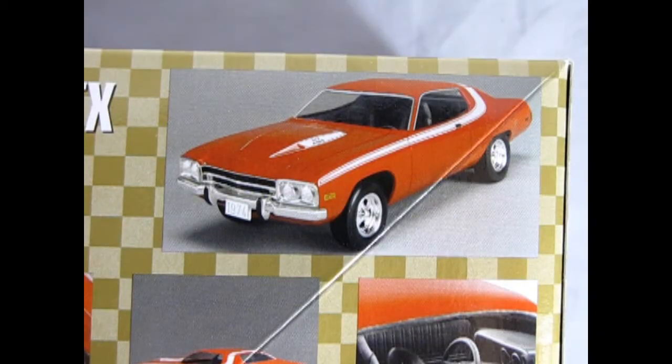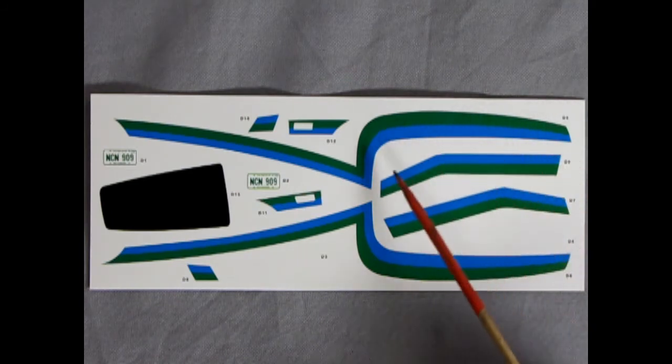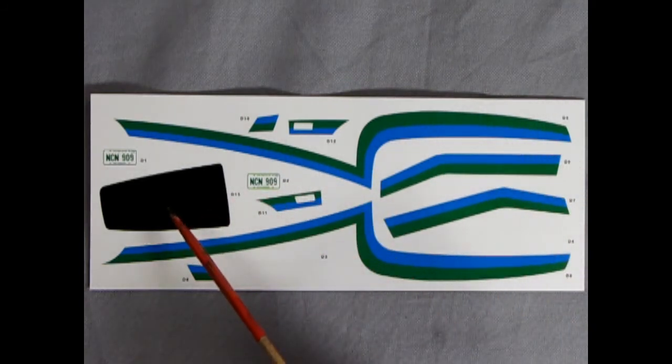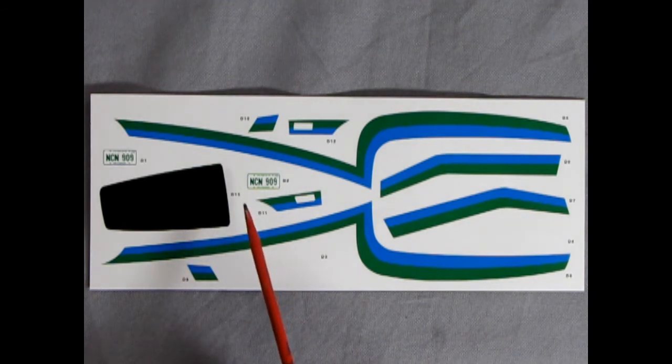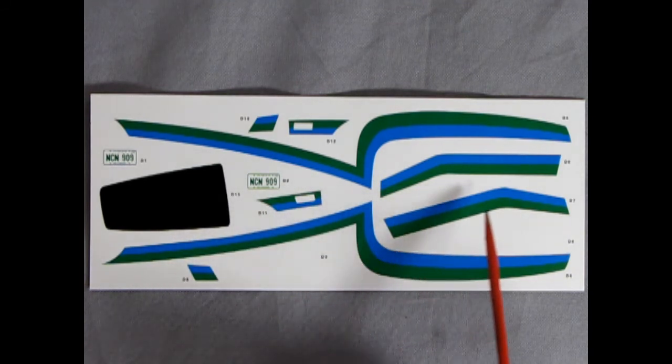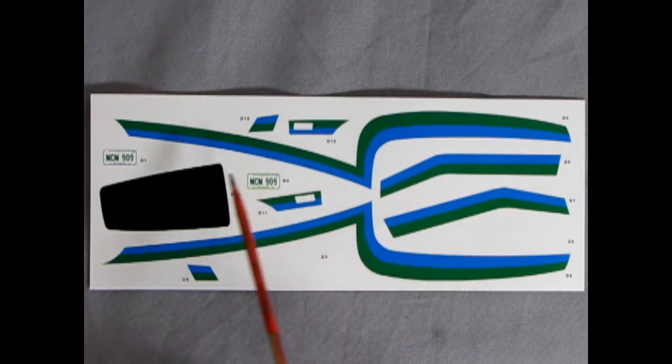Now, it's sad to note that you do not actually get these nice white decals that are on the box art. Instead, you get decals which kind of look like this. So these green and blue stripes are what you actually get, as well as this big black patch for on top of the hood, and some New Hampshire NCN 909 license plates. These reflect the 1983 Street Machine car, which was painted red. So again, I'll show you what that looks like.